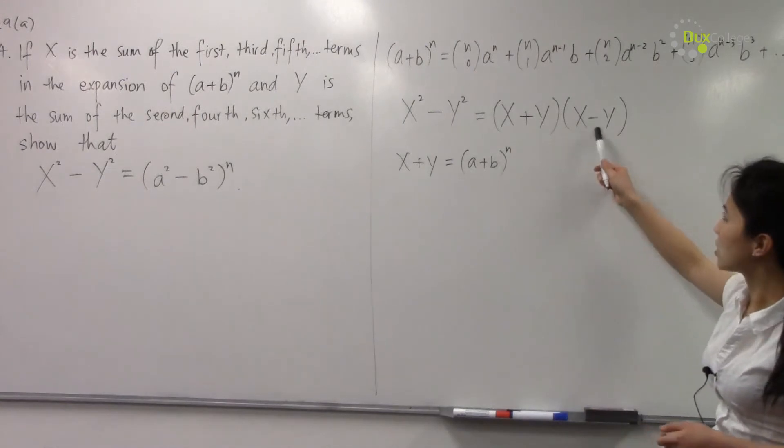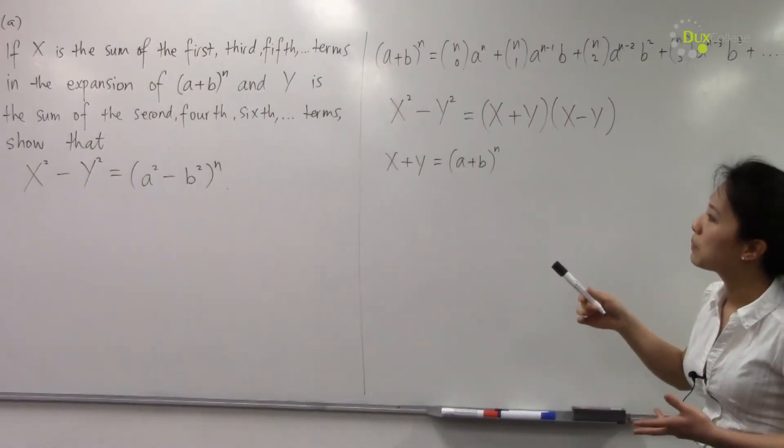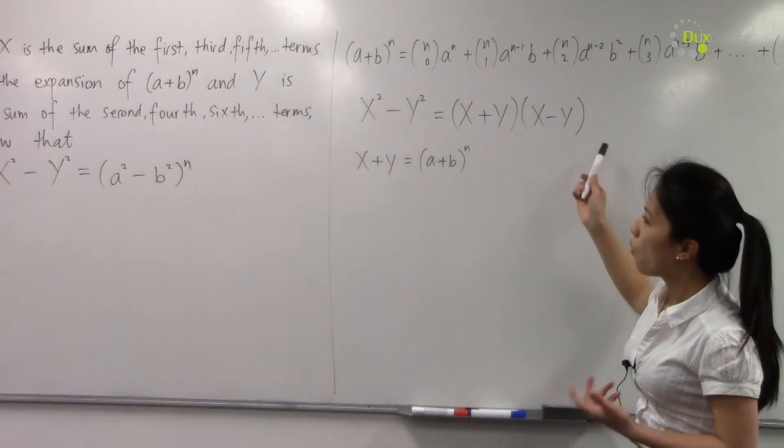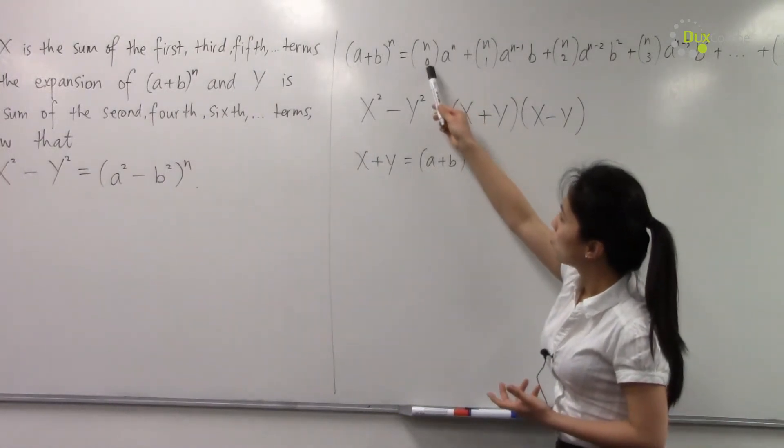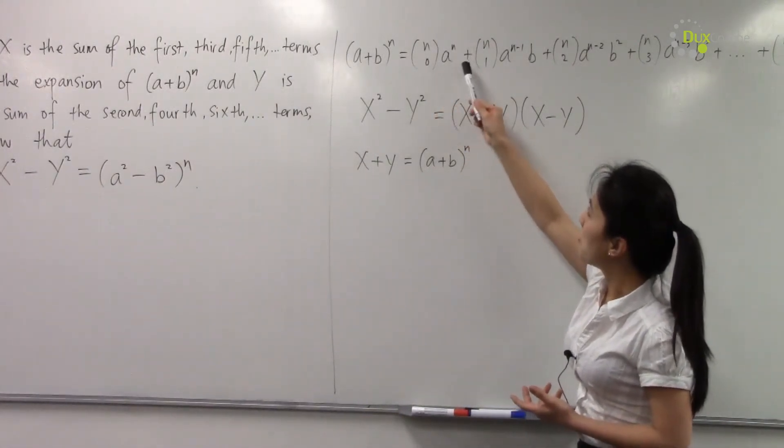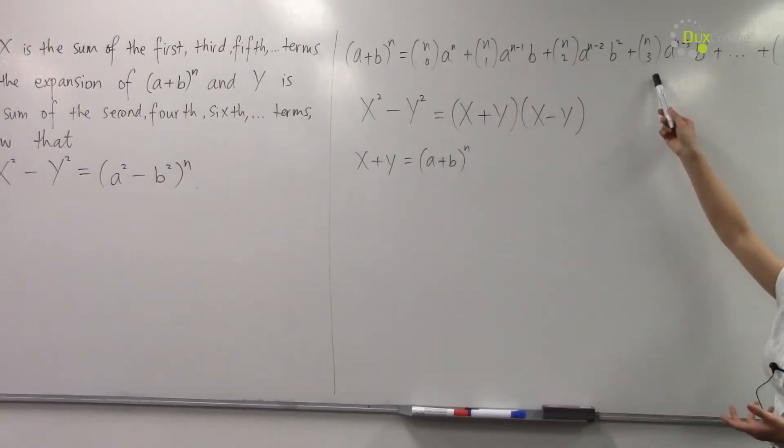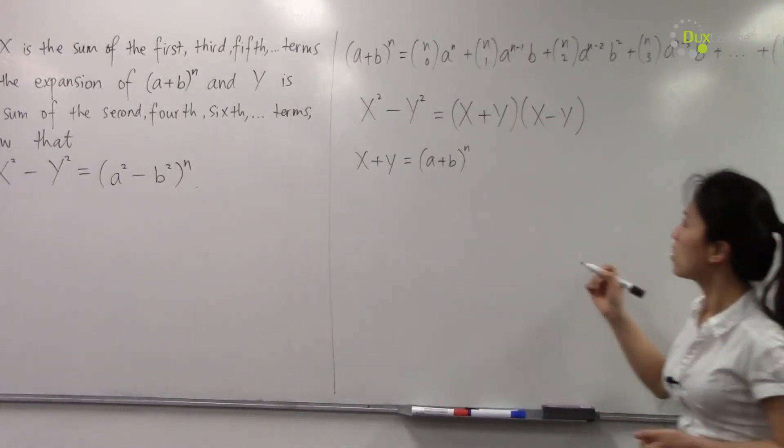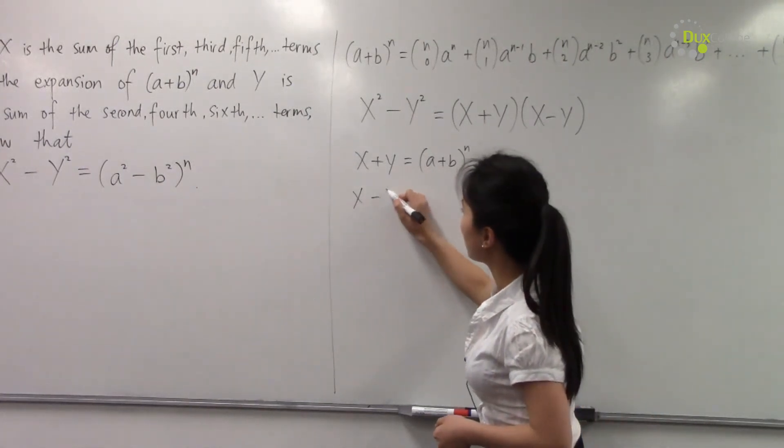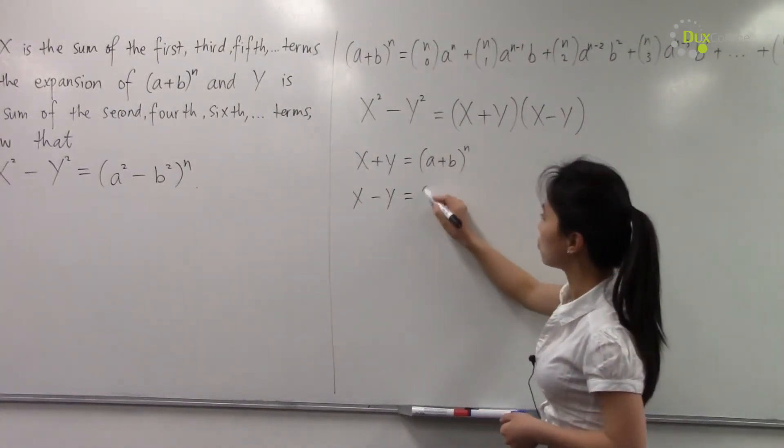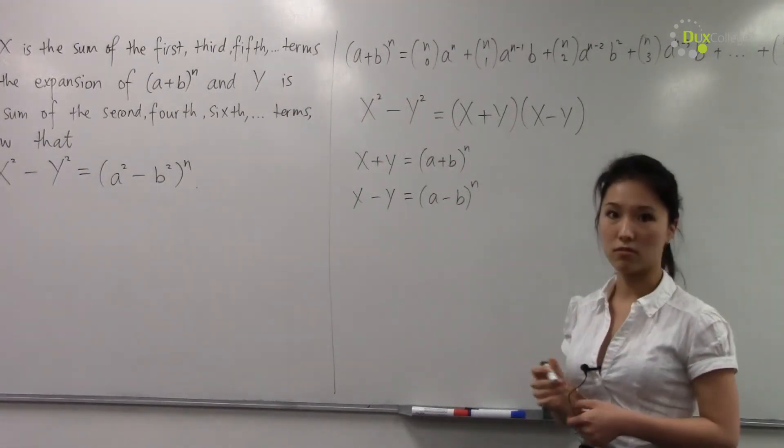When you have X-Y, the signs alternate, which means you have the first term minus the second term plus the third term minus the fourth term, etc. So X-Y equals (a-b)^n.